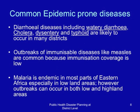Common epidemic-prone diseases include diarrheal diseases like watery diarrhea, cholera, dysentery, and typhoid — these are likely to occur in many districts in the East African region. Outbreaks of immunizable diseases can also occur, like measles, which are common because immunization coverage is low. Malaria is endemic in most parts of Eastern Africa, especially in the lowland areas.